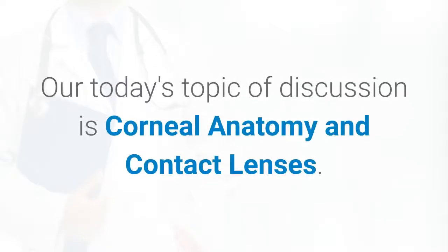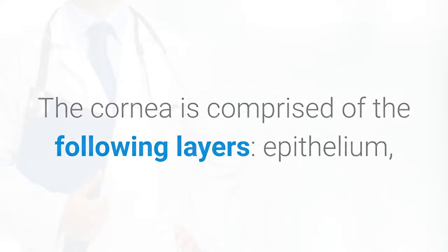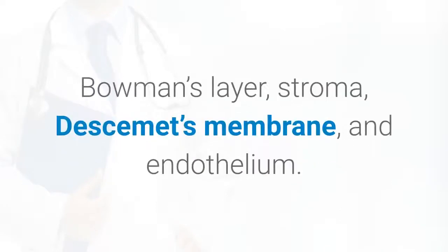Our today's topic of discussion is corneal anatomy and contact lenses. The cornea is comprised of the following layers: epithelium, Bowman's layer, stroma, Descemet's membrane, and endothelium.